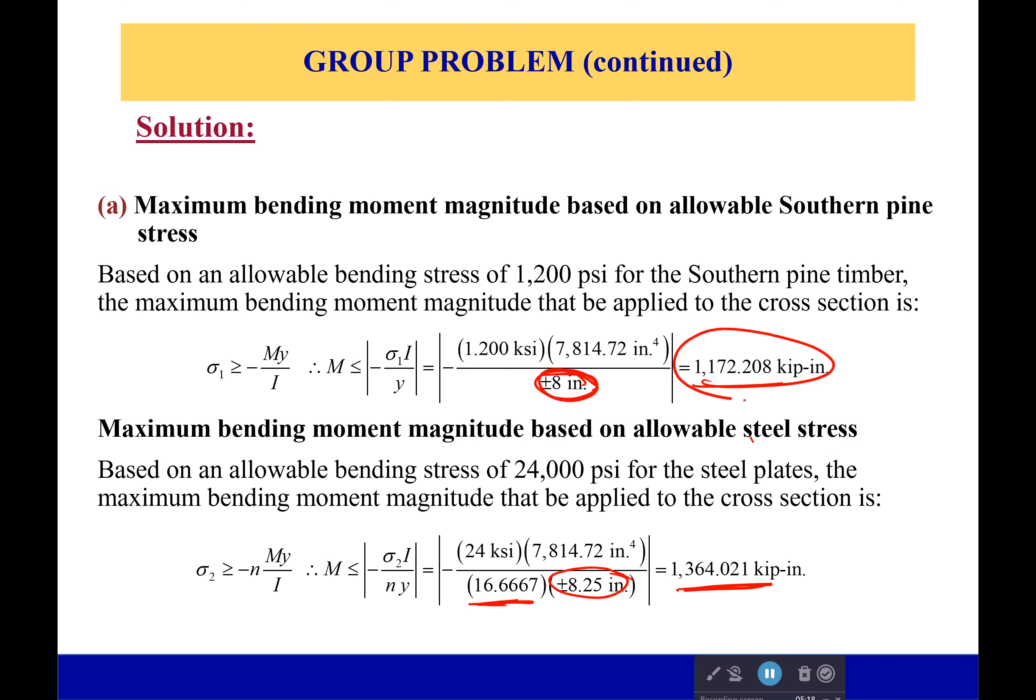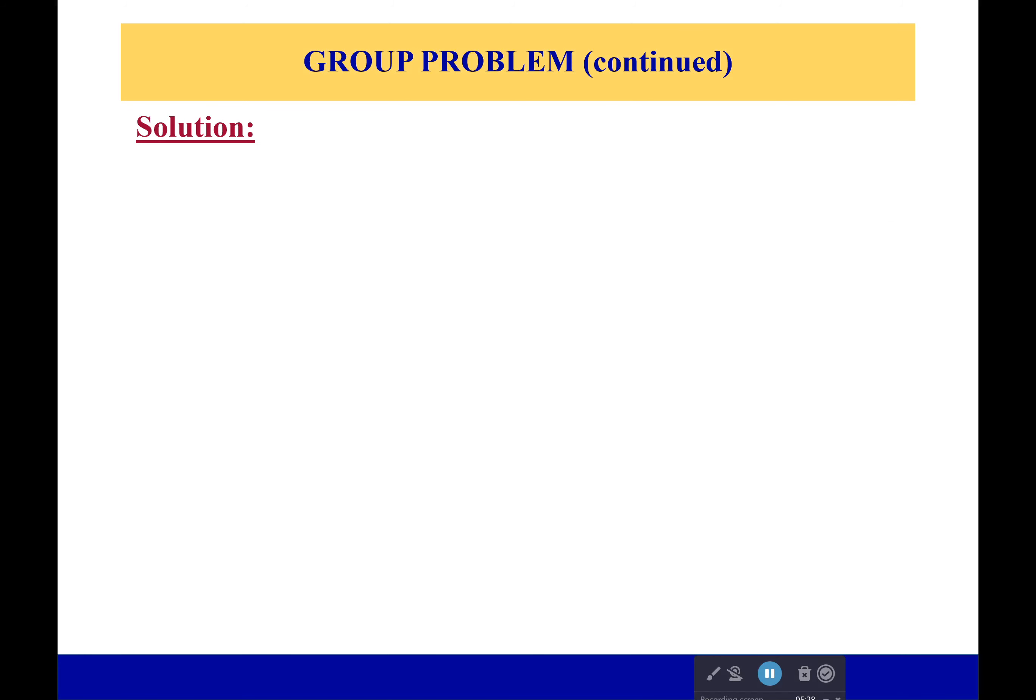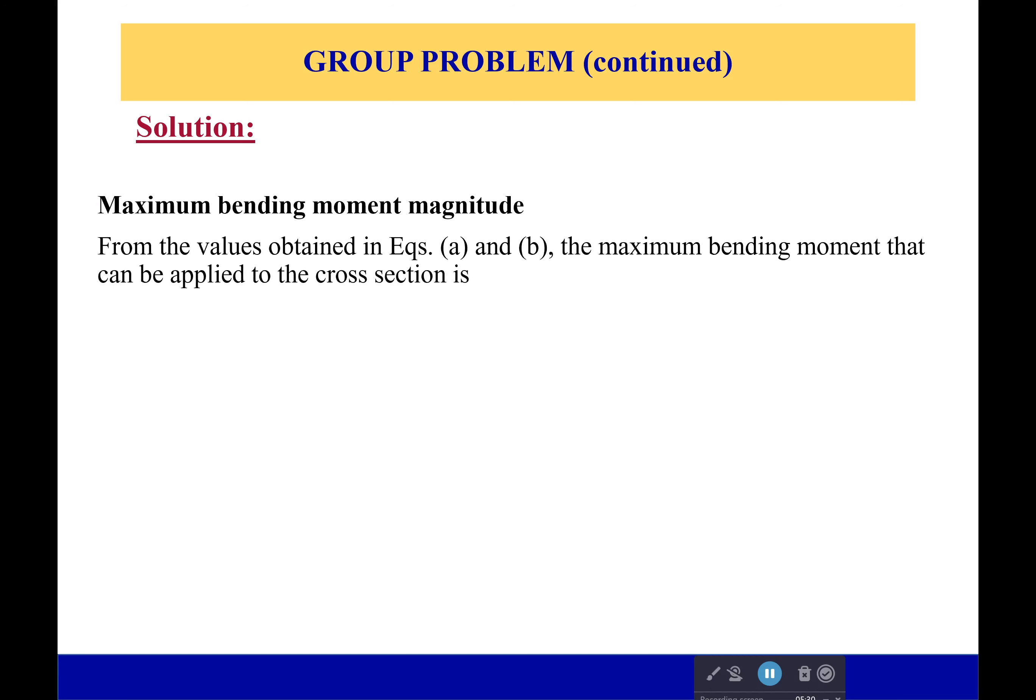But in the end, the southern pine is still going to fail first. So that would be our controlling bending moment right here. We wouldn't be able to go above 1,172 kip inches. I think that's everything for this. So there it is. 1,172 kip inch or 97.7 kip foot. Thank you for listening. I hope this helps you. And I'll see you all next time. Have a wonderful day. Bye-bye.